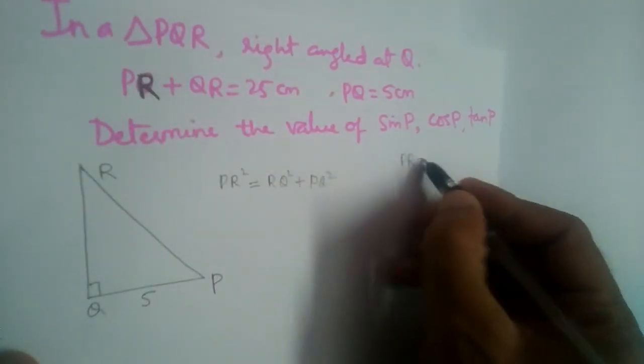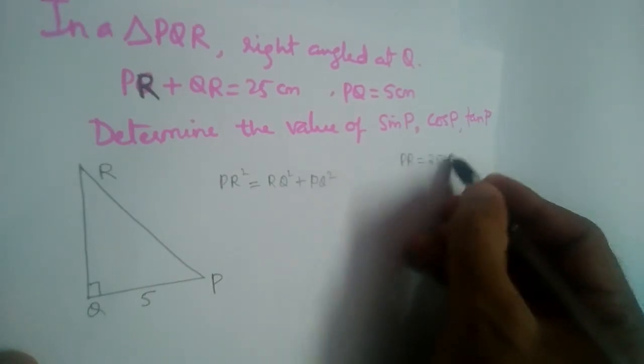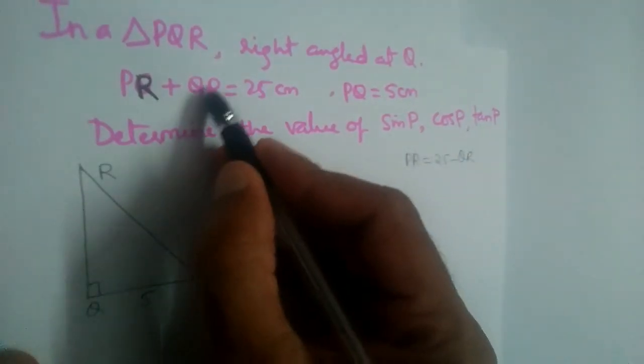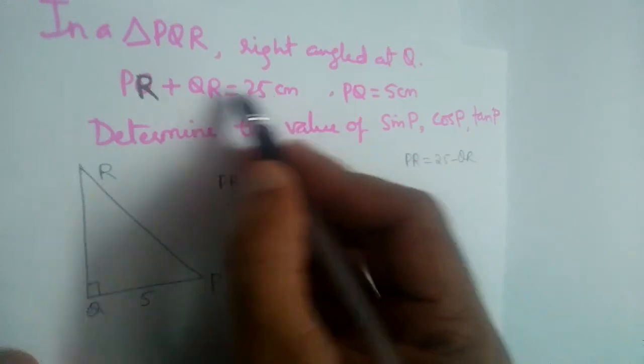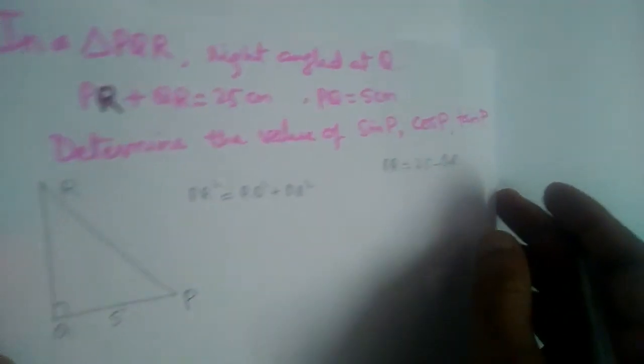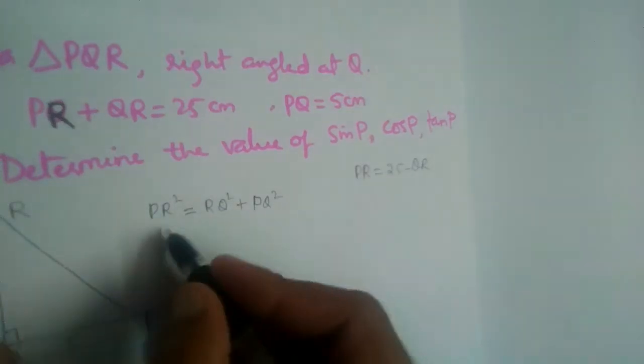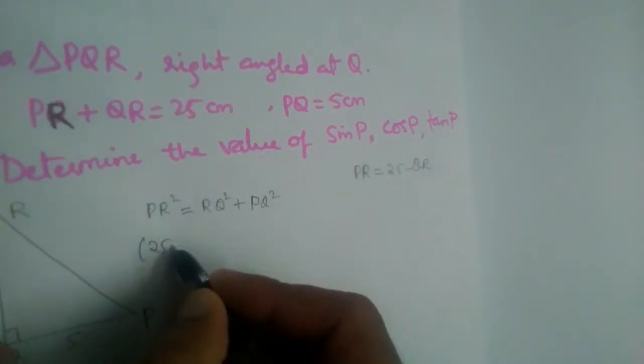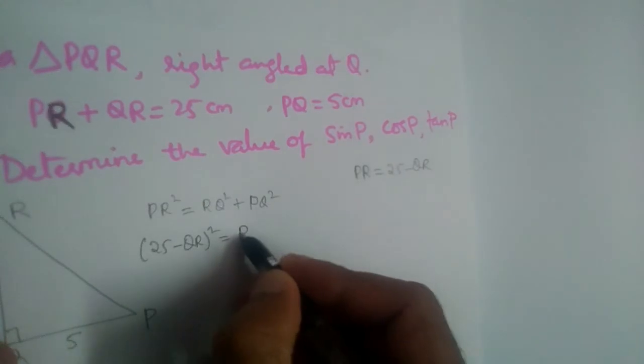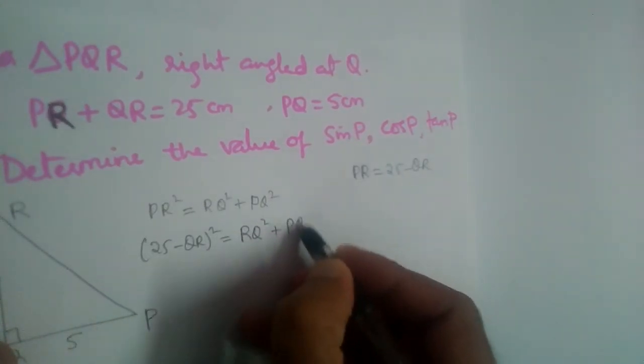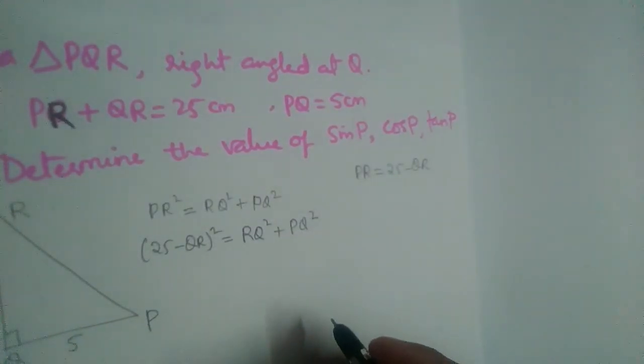No. But given PR is 25 minus QR. So if you send this QR on the other side, it will become 25 minus QR. So what is PR now? 25 minus QR. Let us substitute that PR value in this. So it will become (25 - QR)² = RQ² + PQ².